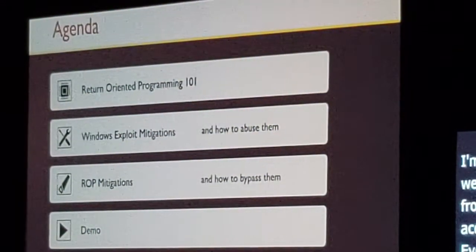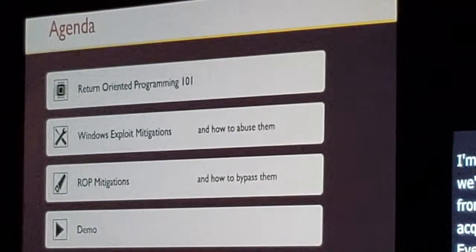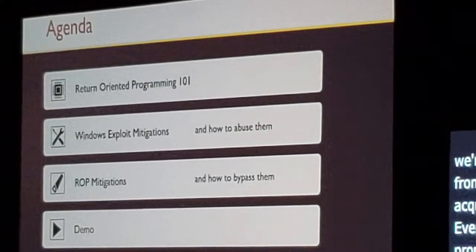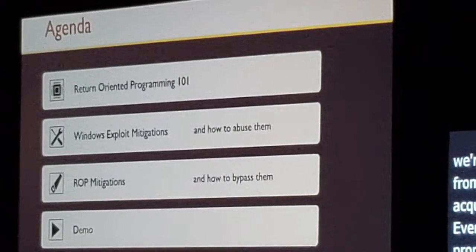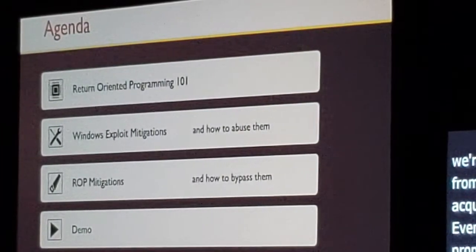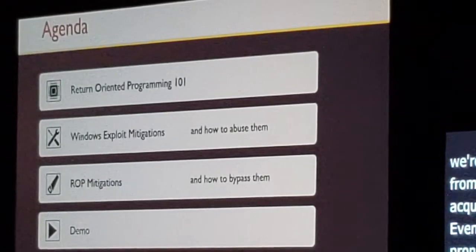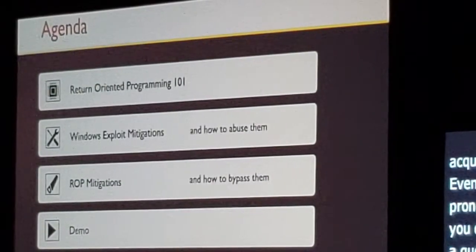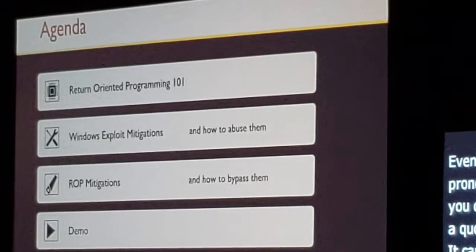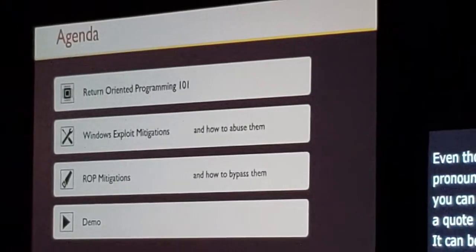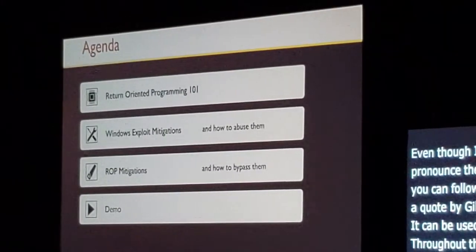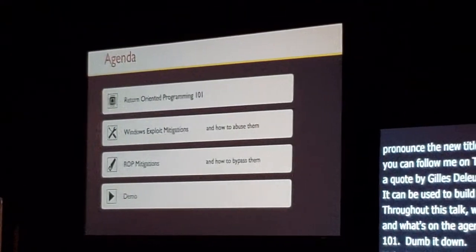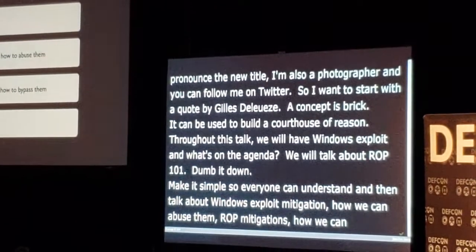So what's on the agenda? We'll start talking about ROP 1.1 — I will dumb things down as much as possible to make it simple so everyone can understand. Then we'll talk about Windows exploit mitigations and see how we can abuse them. Next, ROP mitigations and how we can bypass them. And lastly, there will be a demo where you will clap hands, and if you all behave yourself, there will be a little surprise too.